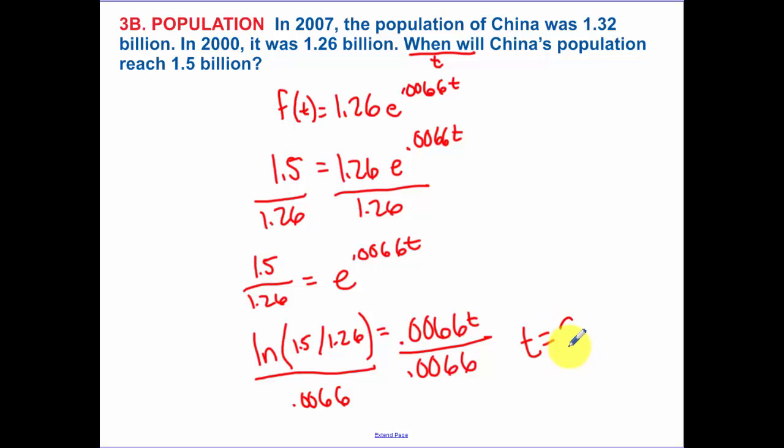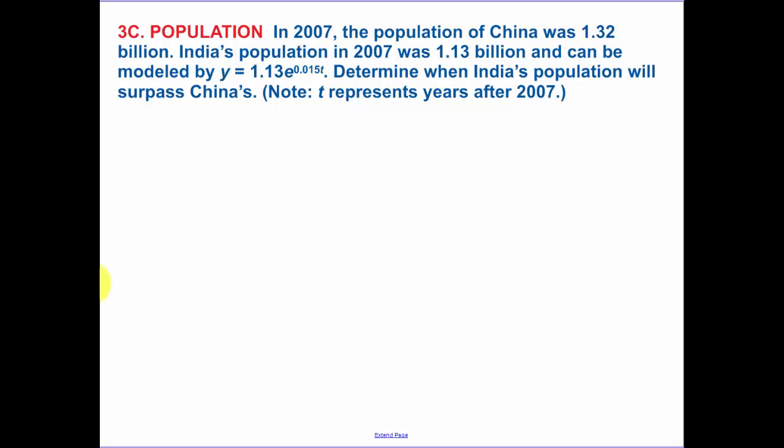So therefore, plugging in my calculator, I get 26.417 years. But now keep in mind, I want to know the year, when. So my initial amount was in 2000. This is 26 years later. So we could say during 2026, because remember, t equals 0 was the year 2000.